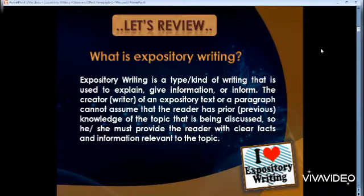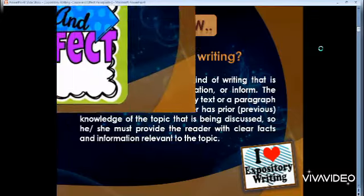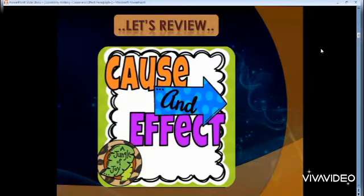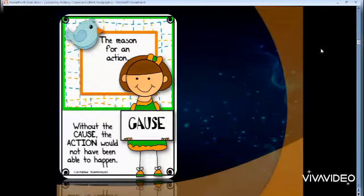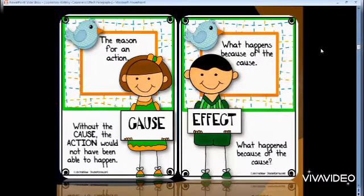Now let's review the cause and effect relationship. When I say cause, it is the reason. When I say effect, it is the result. That's all you need to know. Why did this thing happen — because of what? And what was the result of this reason — what happened? That's all you need to know.